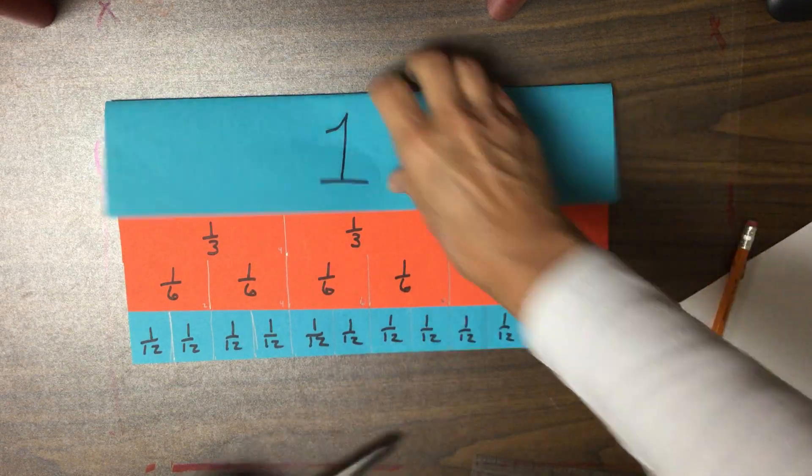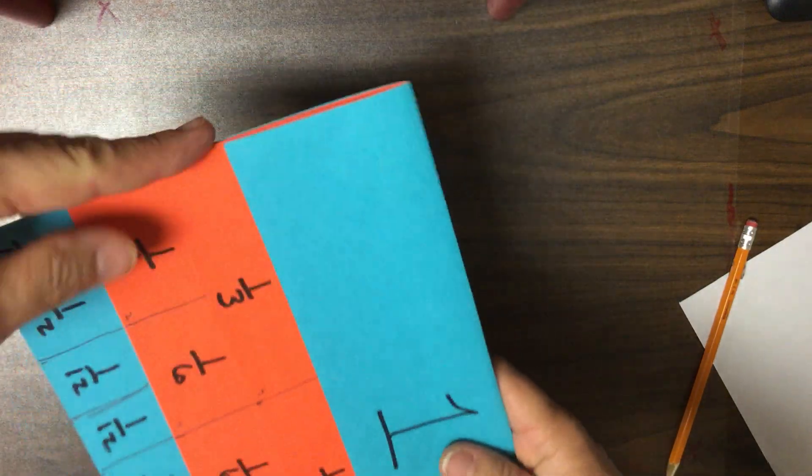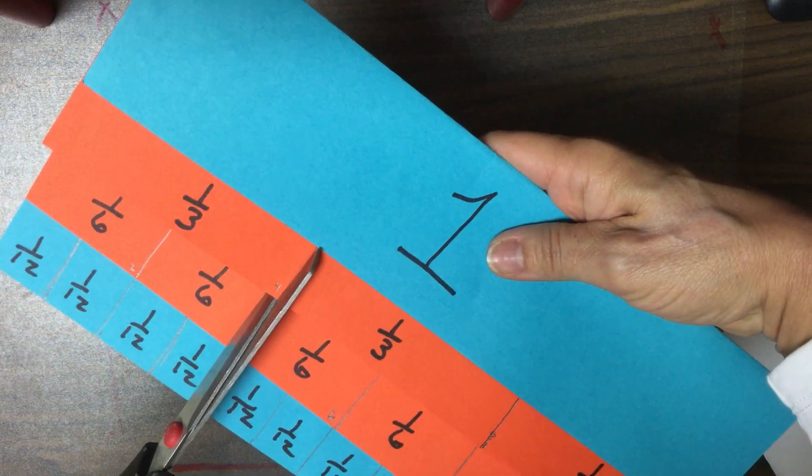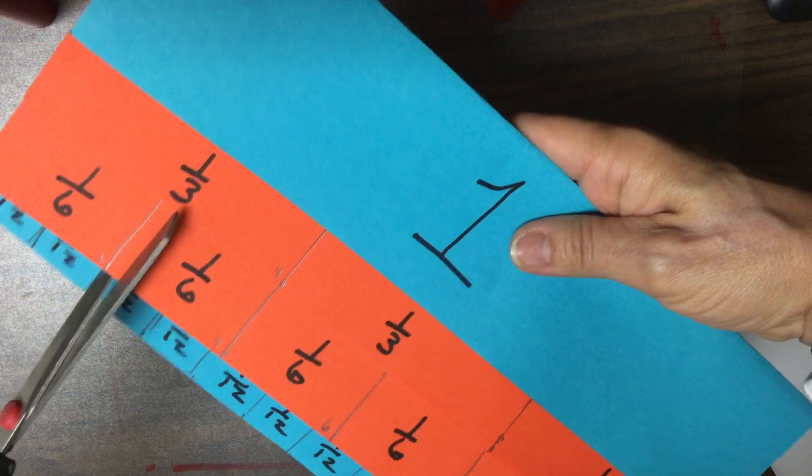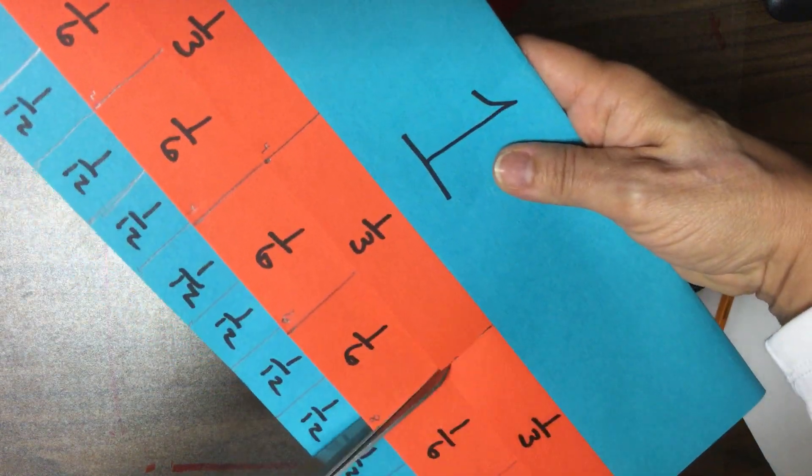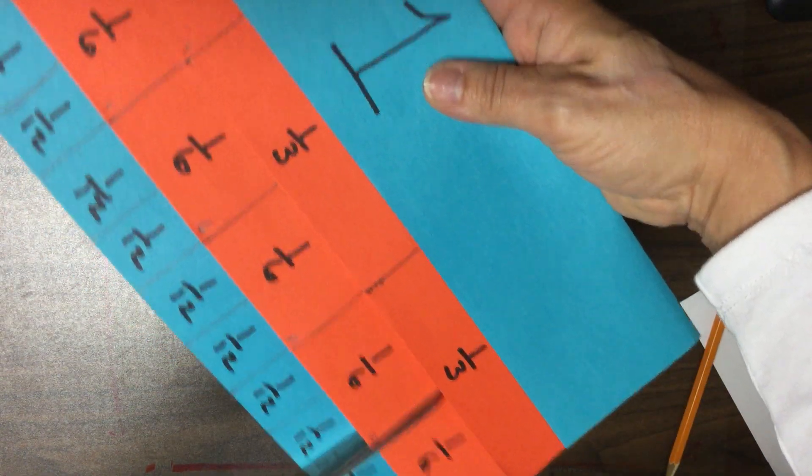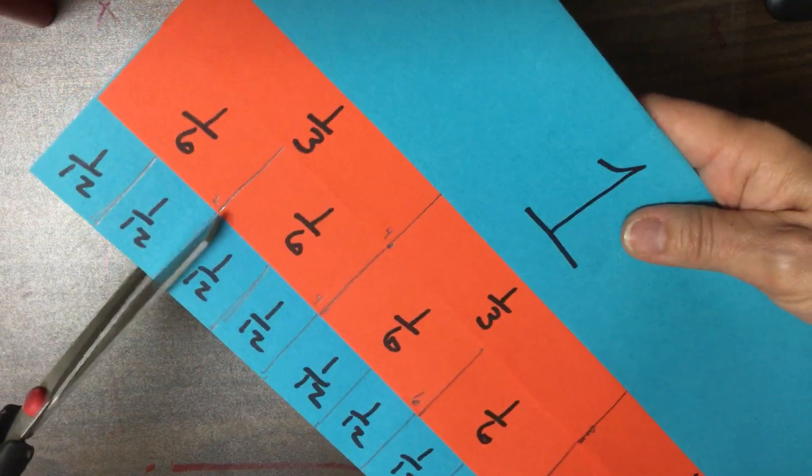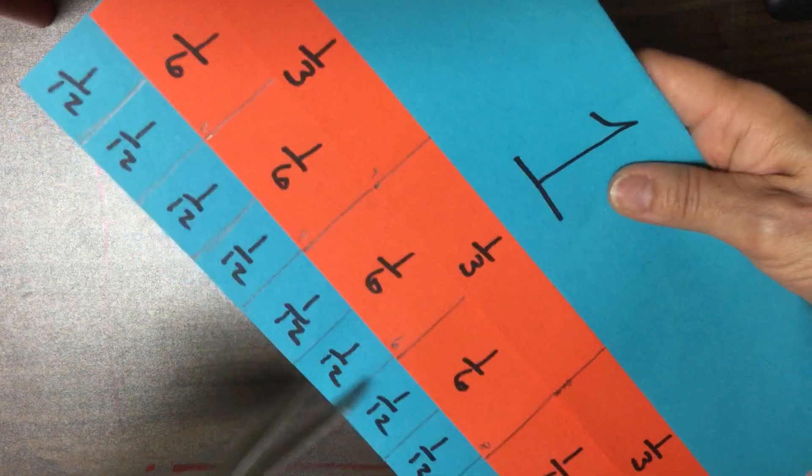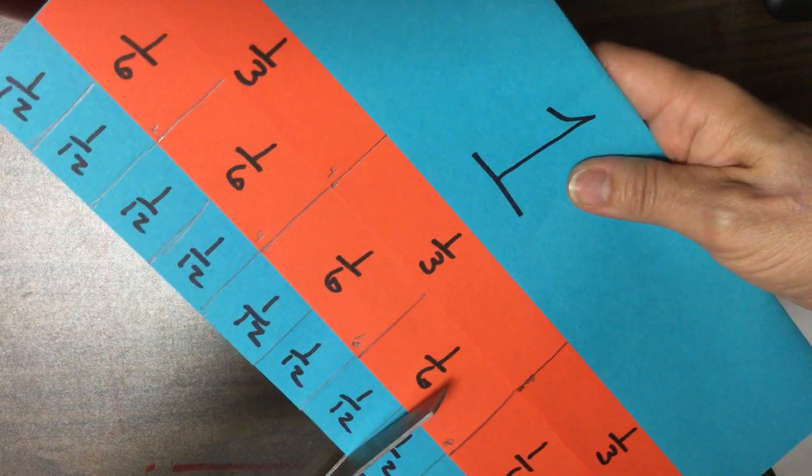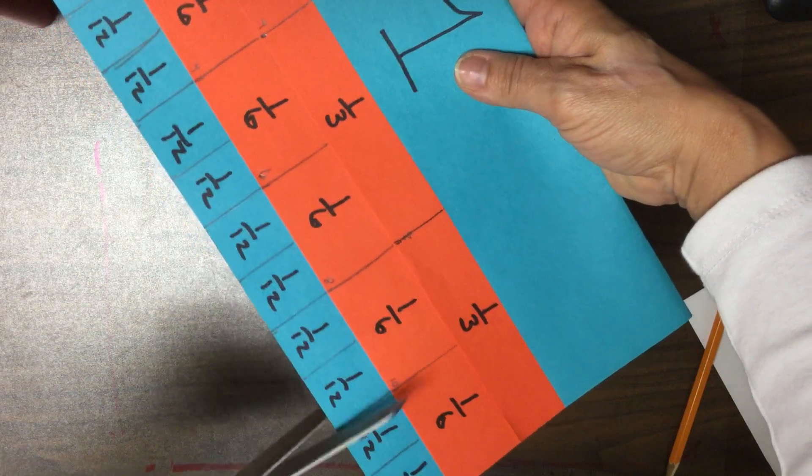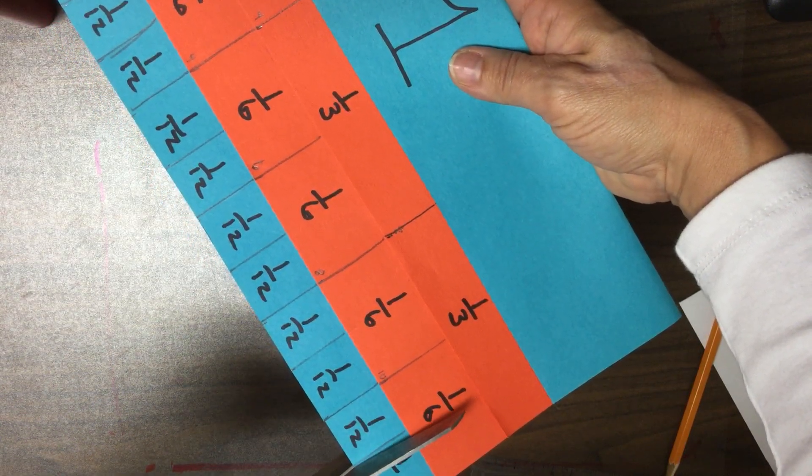And now we can get our scissors. Now remember, we don't cut all the way through. Make sure it's pushed in all the way. And we are just going to cut up to the next tab. So, I'm going to stop right when you get to the next tab. All right. So, this was cut into 12 equal parts. So, each of these little flaps are one twelfth.